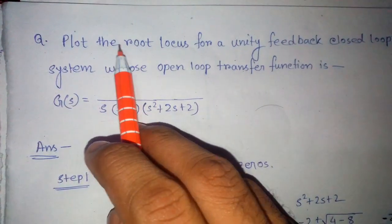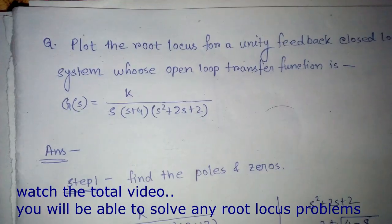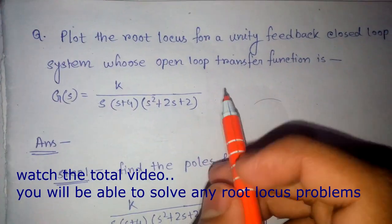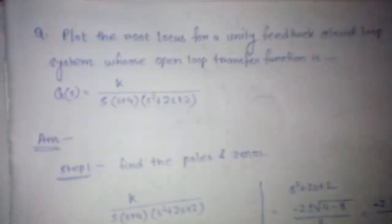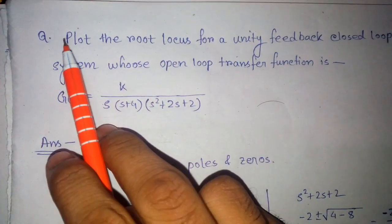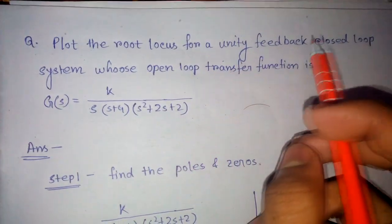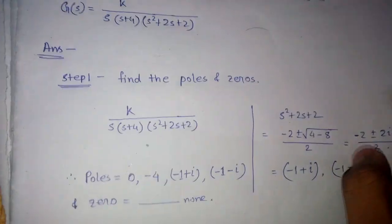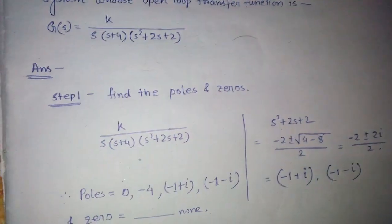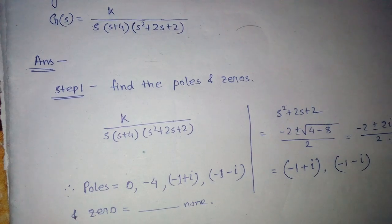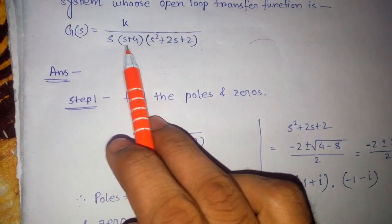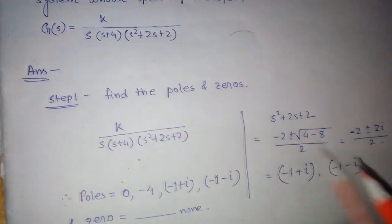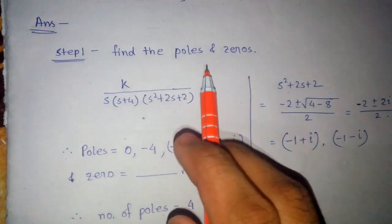Hello friends, today our topic is root locus. Before we start, you must follow the theories first, then I will show you how to solve the problem. Here we have taken a question: plot the root locus for a unit feedback closed loop system whose open loop transfer function is given. The equation is of order four.